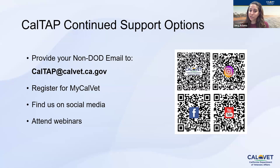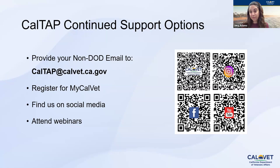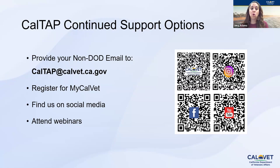We ask that you register for myCalVet on our website. It tailors the website to your needs and will send you information specific to your situation — asking questions like when did you serve, what branch, do you have dependents, have you utilized your GI bill, are you or your dependents going to school, have you bought a home. By registering, you'll also receive a monthly newsletter or weekly emails about our webinars and upcoming presentations so you stay continuously informed.